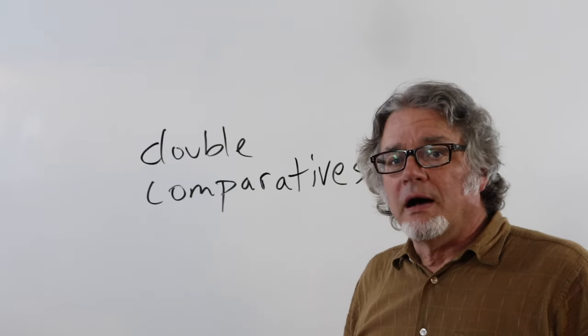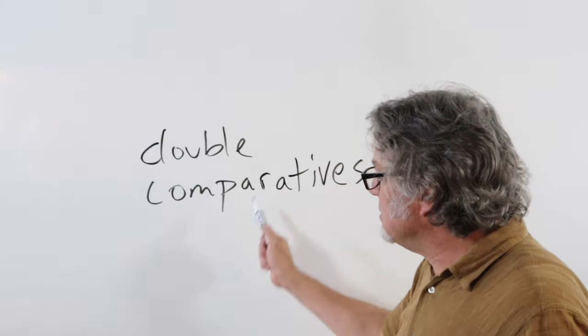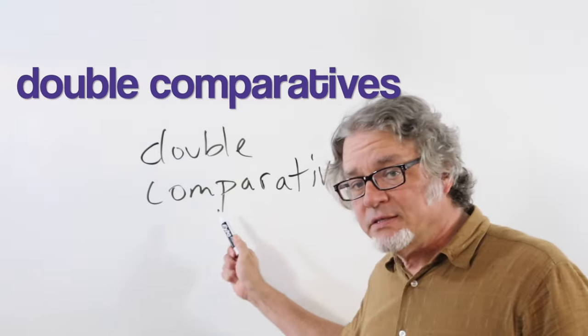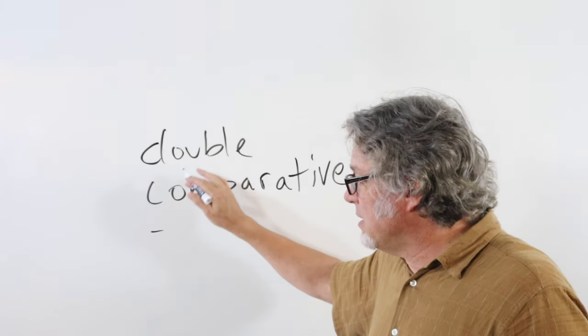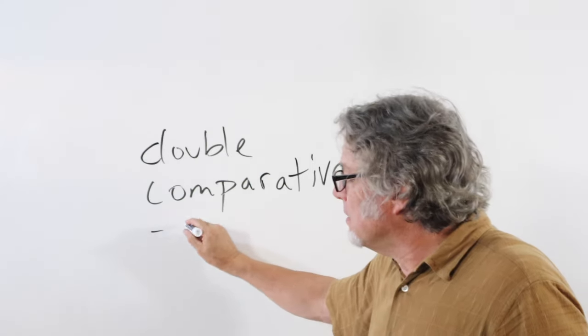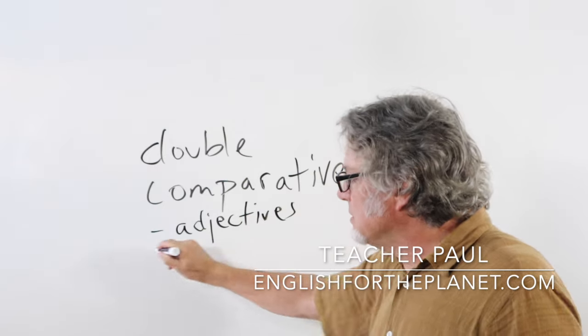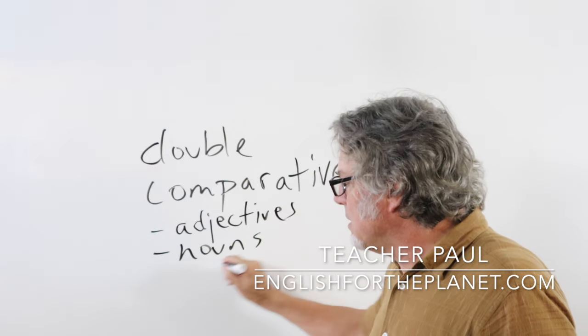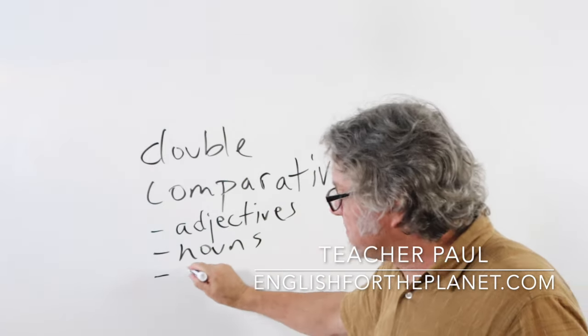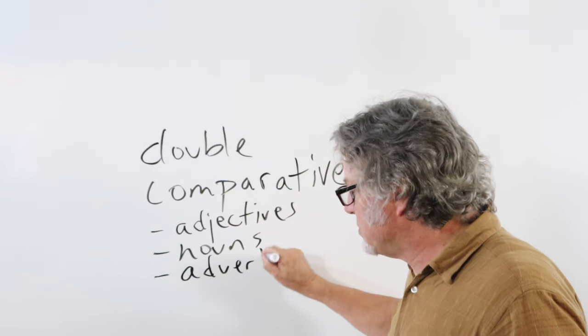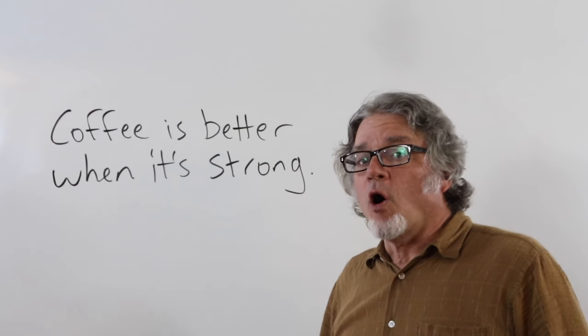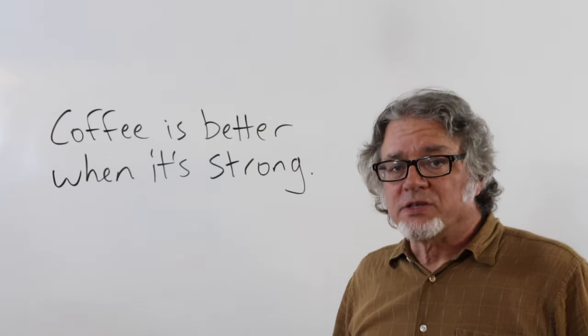In this video I'll show you how to use double comparatives. This would be the comparative form for adjectives, nouns, and you can also use this for adverbs. Coffee is better when it's strong.